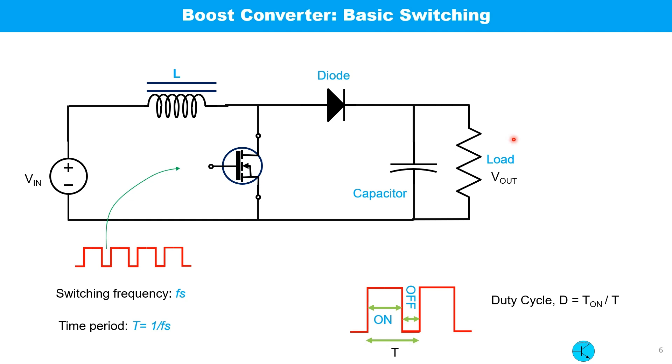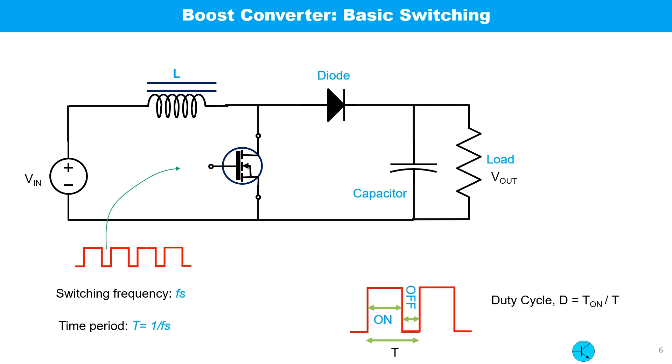In practical boost converter circuits, the mechanical switch is replaced with a MOSFET or other electronic switches. Pulses applied to the MOSFET gate switch it on and off. The switching frequency and the duty cycle - these two terms will be using from now on. During the MOSFET on time, the inductor is being charged. The peak current at the end of the on time is expressed by equation: I_P equals V_in by L times D by f_s.